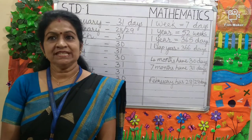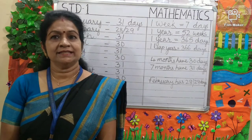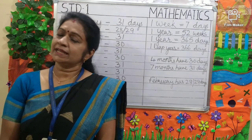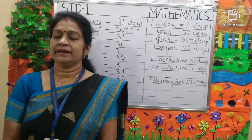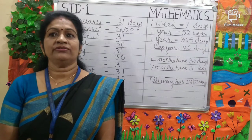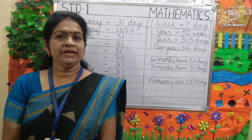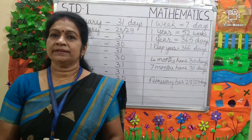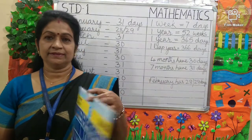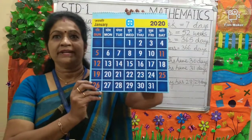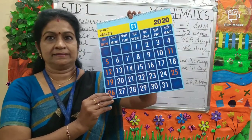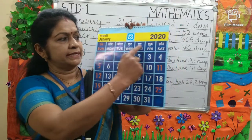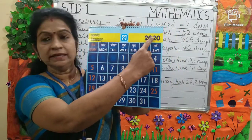Now, children, we will be learning about a calendar. What is a calendar? A calendar shows the months, days and dates of a year. We have 12 months in a year. Here is a calendar. It shows the month, the days and the year.